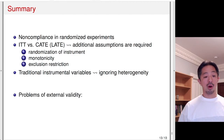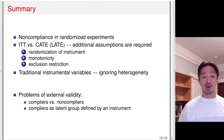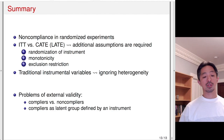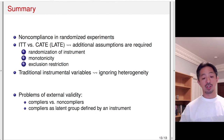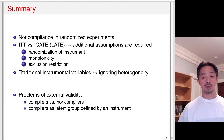The problem of external validity is important to recognize — the difference between compliers and non-compliers always needs to be examined. Compliers depend on what instrument you use, so different encouragements can induce different people to be compliers. Even if the target treatment is the same, estimates using different instruments may differ because you're looking at different groups of people as compliers.